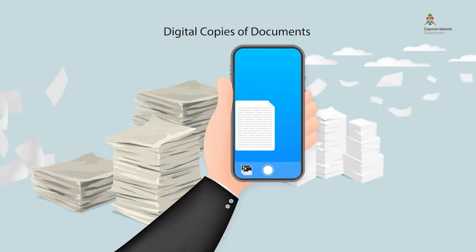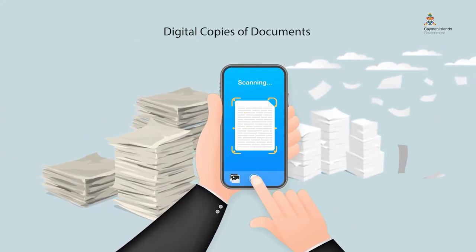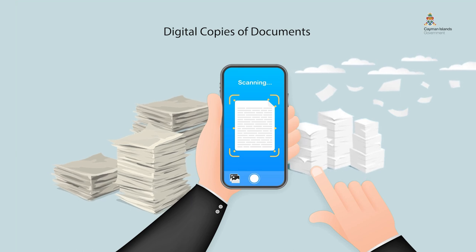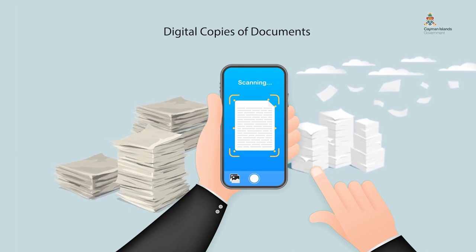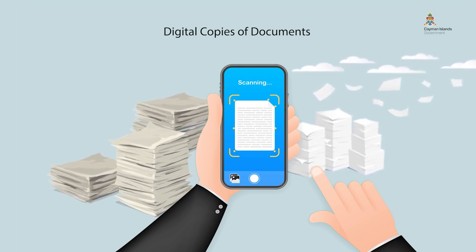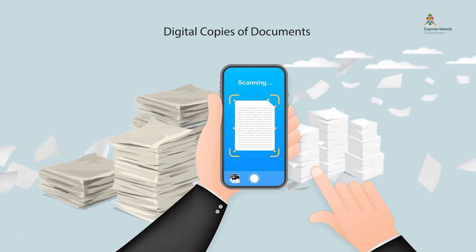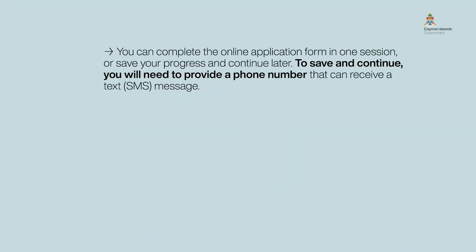If all you have are paper copies, you can have them scanned or use a mobile device like a tablet or cell phone to take a clear photo of the entire document before or while completing the application form.